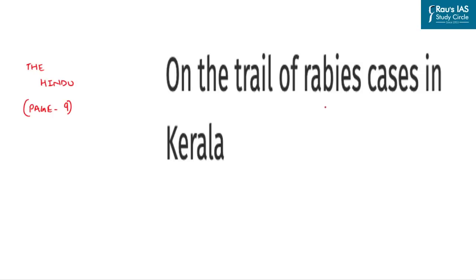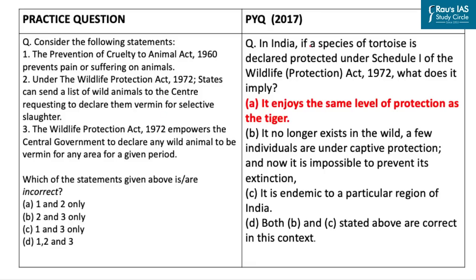The next article talks about the issue of rabies in Kerala, which has been spreading in the state. UPSC in previous years has asked questions under the environment section related to various wildlife acts. The practice question says: consider the following statements.